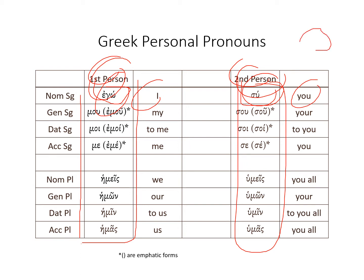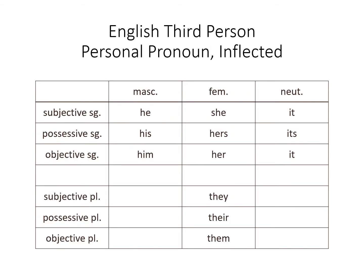Now on to the third person personal pronoun. He, she, and it. Here's just an English review — he, she, it for the different genders.